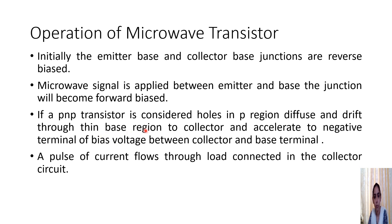From the emitter, holes diffuse and drift through the thin base region. The base region is thin compared to the emitter region. The carriers drift through the base region, are collected by the collector, and accelerated to the negative terminal of the bias voltage between collector and base. The emitter-base junction is forward biased and the collector-base junction is reverse biased, causing a pulse of current to flow through the load connected in the collector circuit.